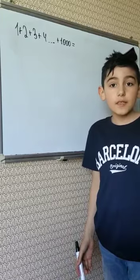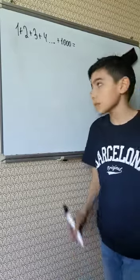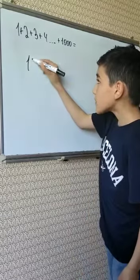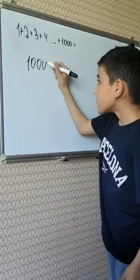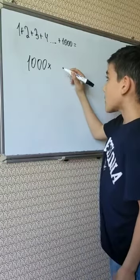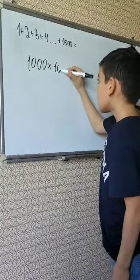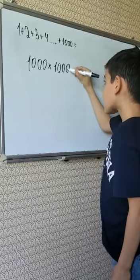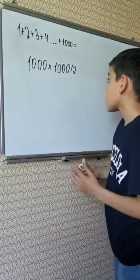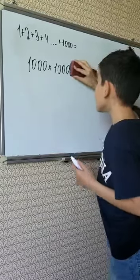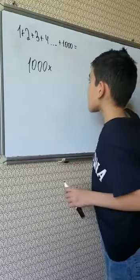But this way, it's way easier. First, we need to multiply 1000 by 1000 divided by 2. 1000 divided by 2 is 500.